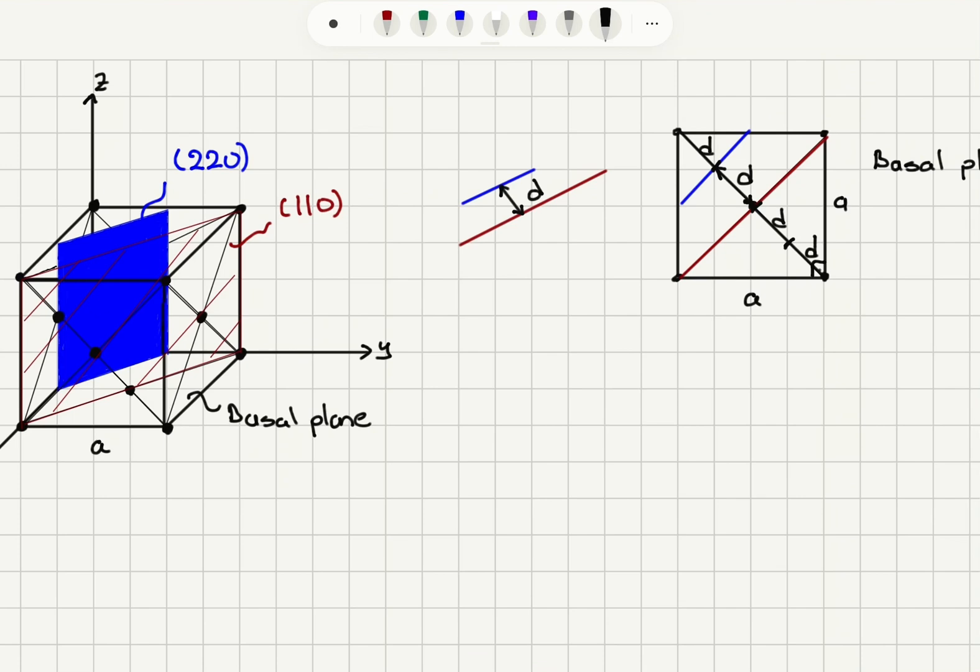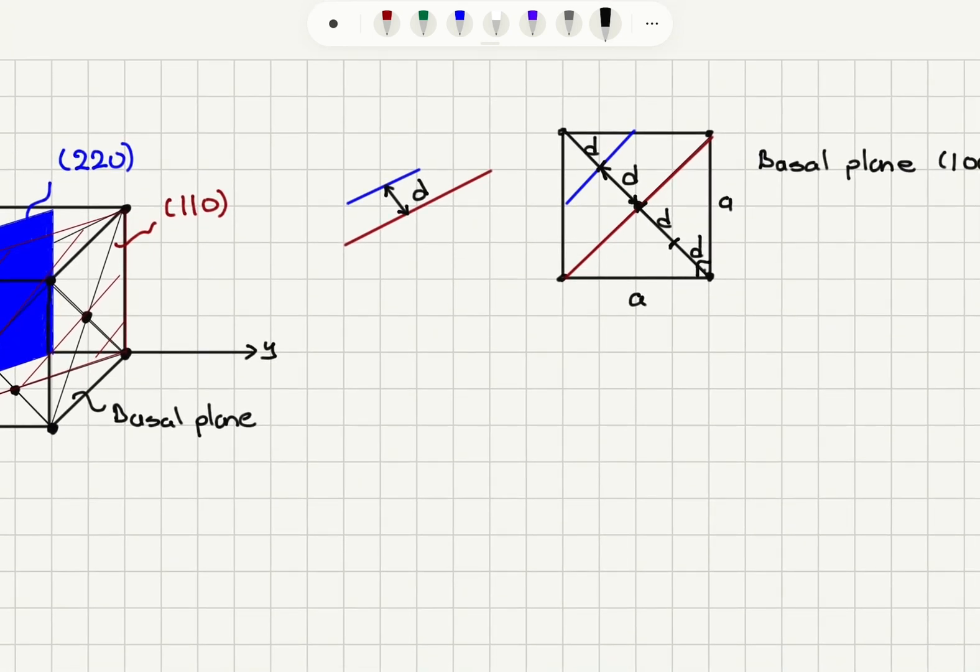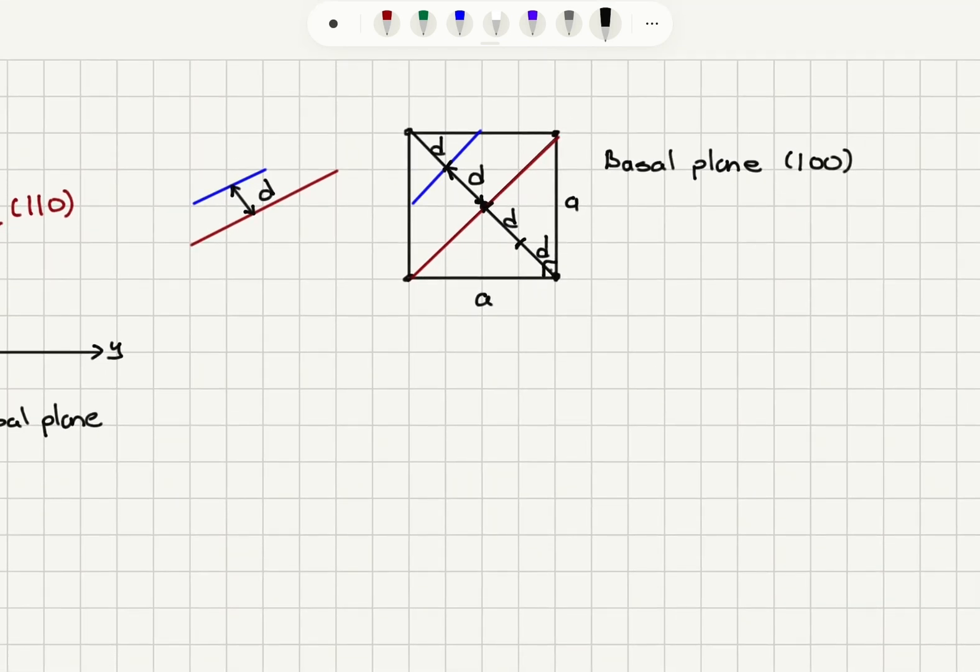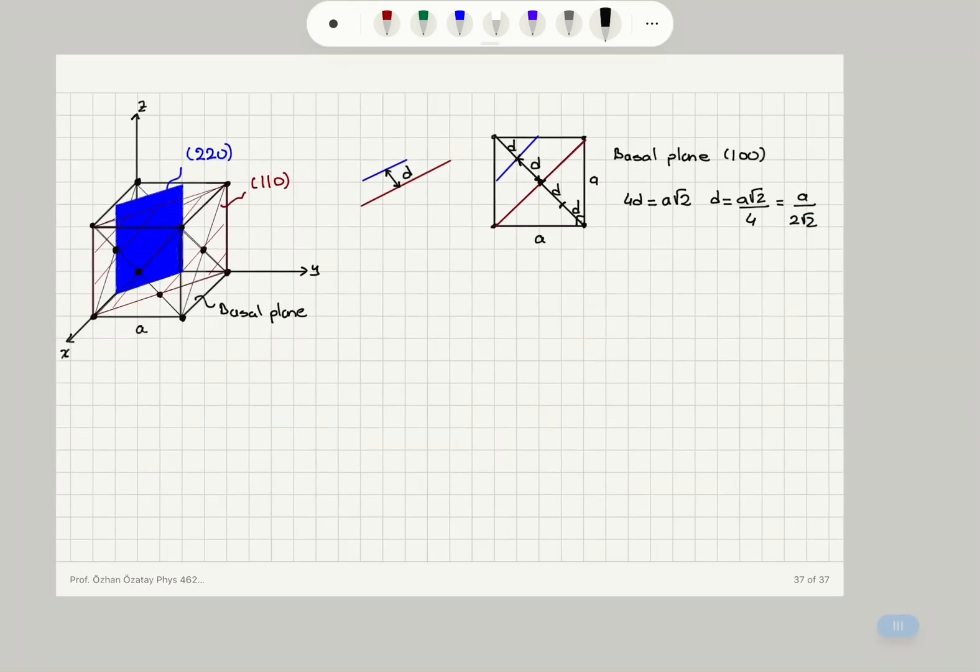Then I have, because the face diagonal is going to equal 4d, I will have 4d equal to, from the right triangle here, a square plus a square is the hypotenuse square. So, I will have 4d must equal a square root 2, and the distance between these planes should be a square root 2 over 4, which is a divided by 2 square root 2.